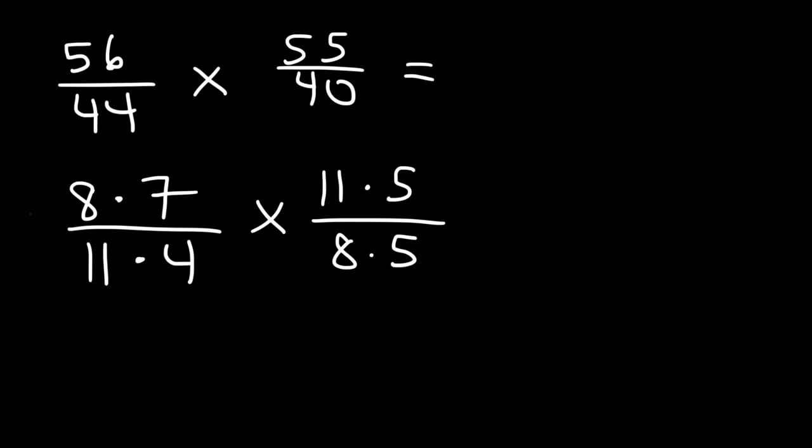So we can cancel an 8. We can cancel an 11. And we can cancel a 5. So the final answer is 7 over 4. And that's it.